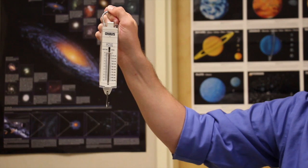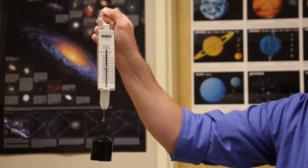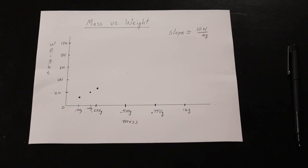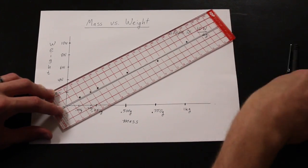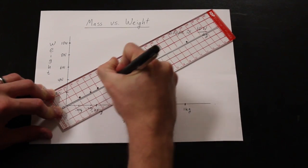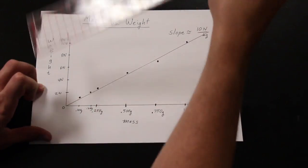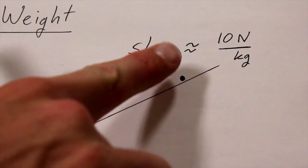For example, mass versus weight. It's really handy to use this best-fit line ruler because it helps you draw a line between the points you've plotted. There. The slope is 10 newtons per kilogram.